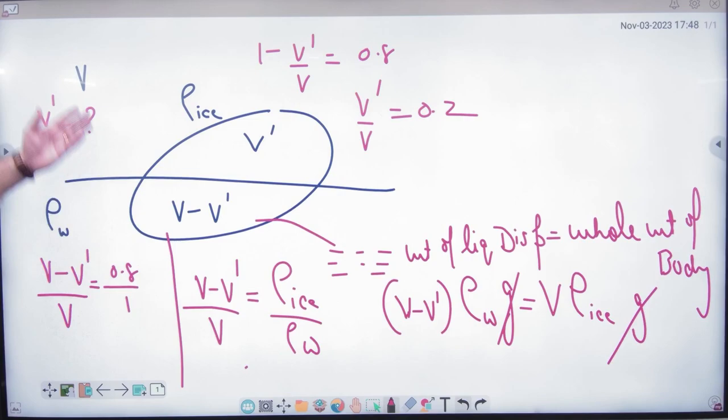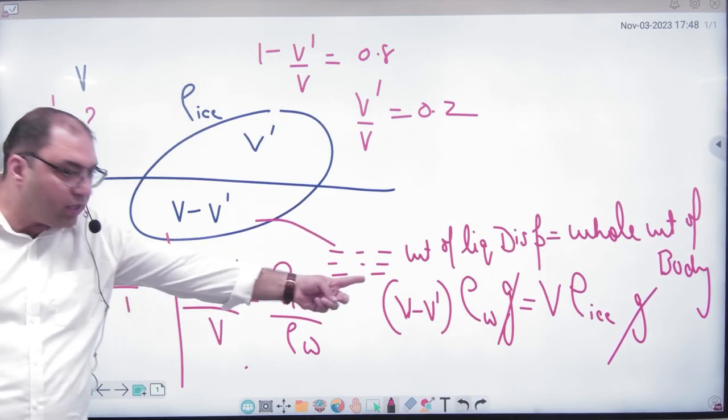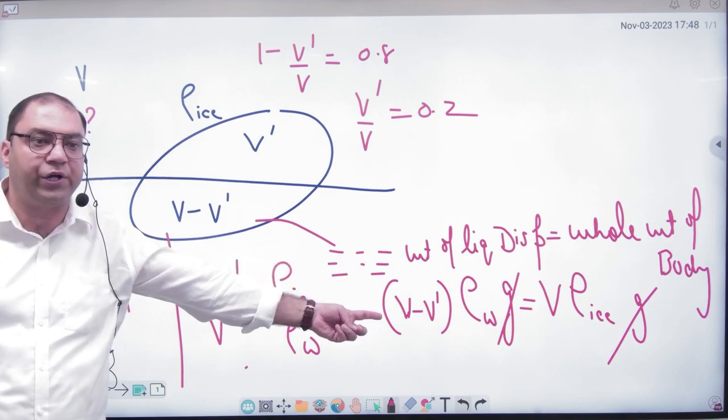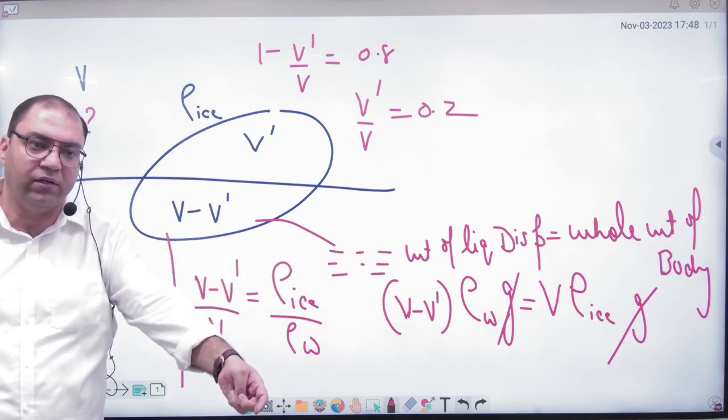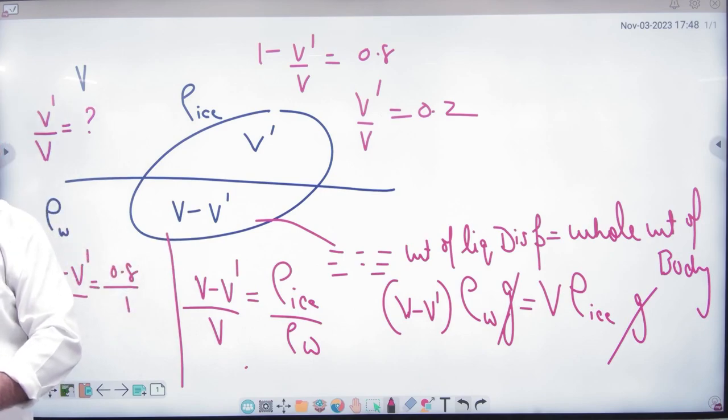That will be calculated by answer. But you have to understand the rules. Calculation is not important. Important is that you put in which density? Body of weight is body density and liquid space and weight is liquid density.